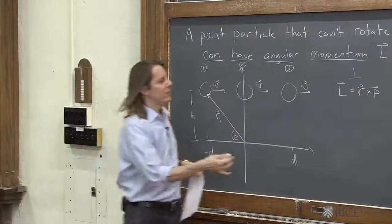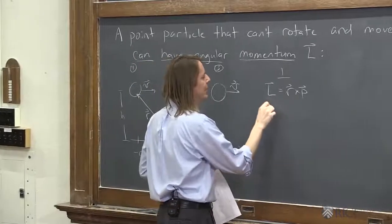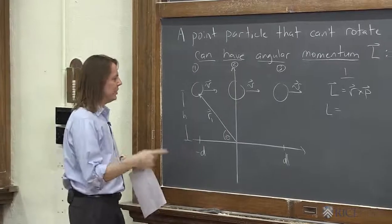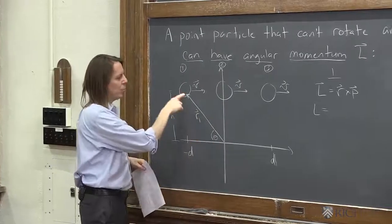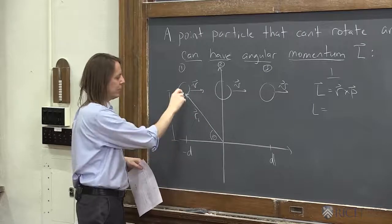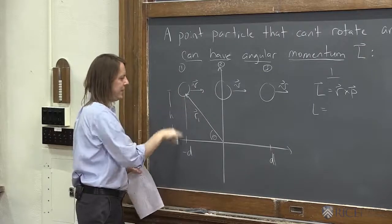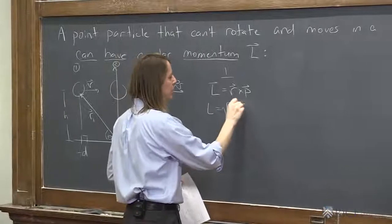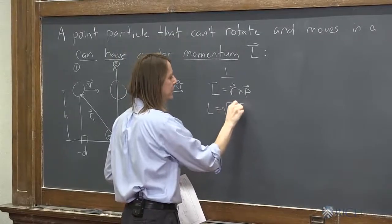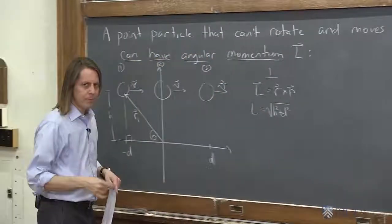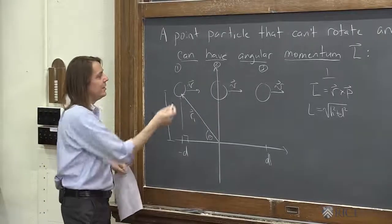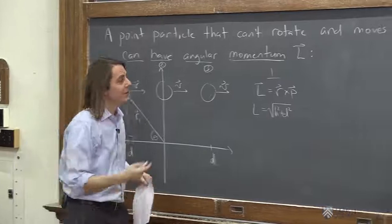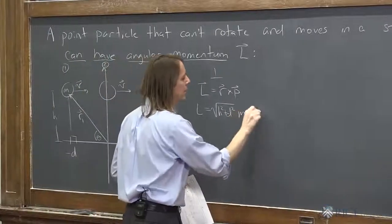So the way we'll do it is we'll go with the magnitude way. The magnitude of R times the magnitude of P times the sine of the angle between them. The magnitude of R1 in this case is, it's a right triangle, right? So there's H, D, right triangle, Pythagorean theorem, the square root of H squared plus D squared. There's R. The magnitude of P is just MV.